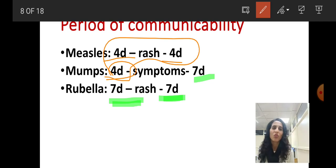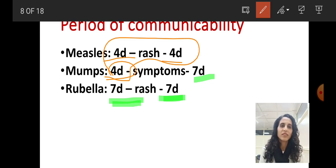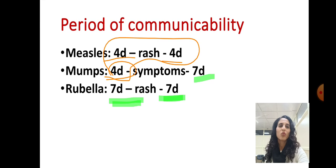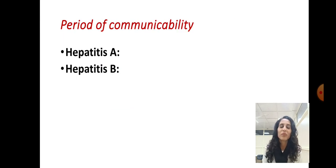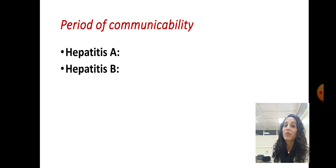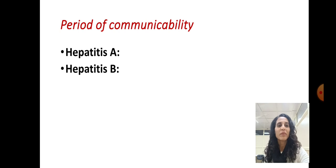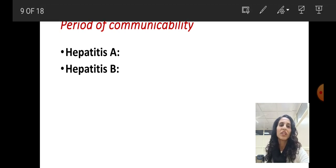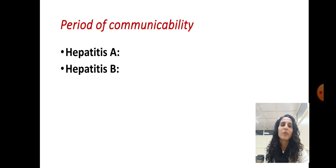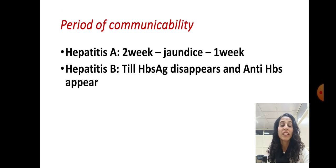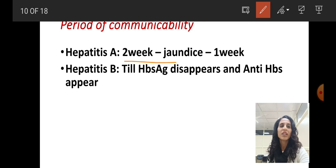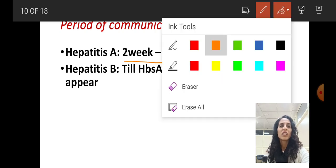To summarize: measles is 4 days and 4 days; mumps is 4 days and 7 days; rubella is 7 days and 7 days. Now, what is the period of communicability for hepatitis A and B? Hepatitis B is more serious than hepatitis A. The period of communicability for hepatitis A is two weeks before jaundice appears up to one week after jaundice disappears.